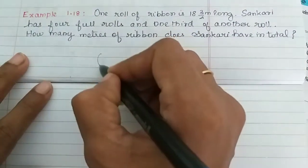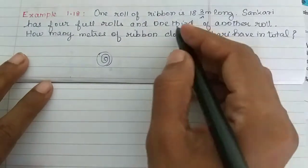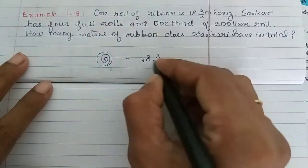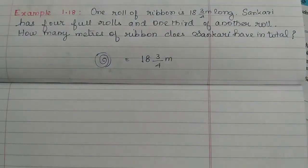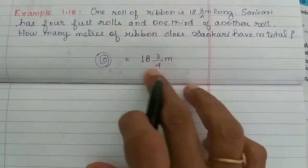You can see here the ribbon. It's just a roll. In a full roll, if you look at ribbon meter, meters of ribbon is 18 3 by 4 meter. If you look at ribbon cut and cut, it's 18 meter. If you look at ribbon, it's 3 by 4 meter.